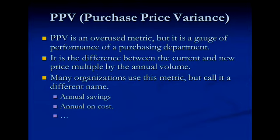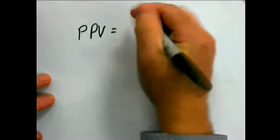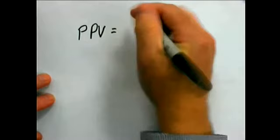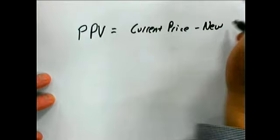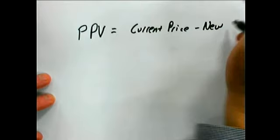Purchase price variance is an overused metric to gauge the performance of a purchasing department. It's the difference between the current and the new price multiplied by the annual volume. Many organizations use this metric and call it by a different name — annual savings, annual on-cost, etc. The formula is: PPV = (current price − new price) × volume (number of parts per year).